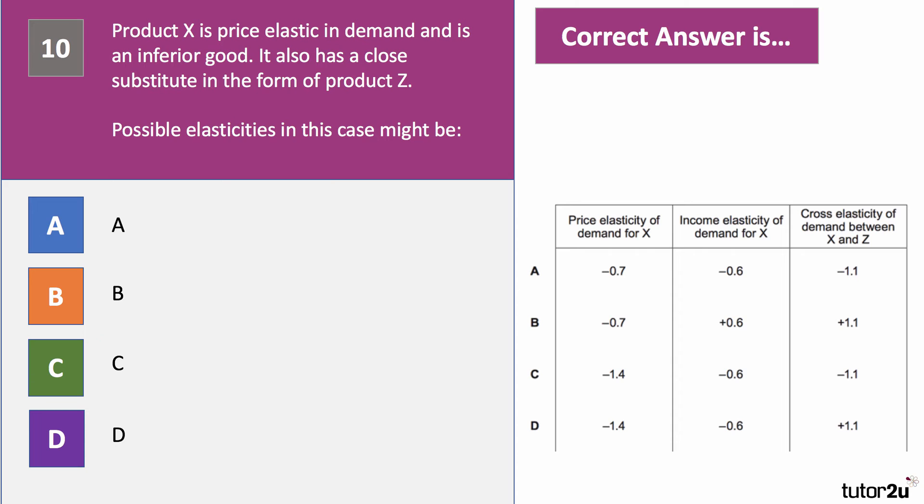Question ten is an elasticities question, checking your knowledge of three types of elasticity. Product X is price elastic in demand and is an inferior good. It also has a close substitute in the form of product Z. We're given three characteristics: price elastic, therefore it has to have a coefficient of more than one, so it has to be C or D. It's an inferior good, therefore it has to be negative — both C and D are negative. It boils down to substitutes. The cross elasticity of demand for two substitutes is always positive, so the answer is D. In this case they are close substitutes, with coefficients greater than one.